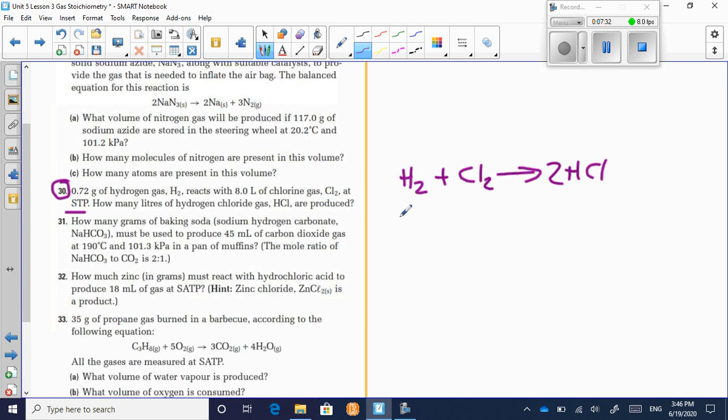So here in this case, the mass here was 0.72 grams. The volume here was eight liters. And because it's at STP, the temperature is zero degrees Celsius or 273.15 Kelvin. You know, the pressure is 101.3 kPa. So you can convert this to moles, convert this to moles.